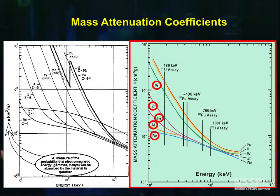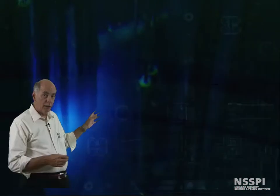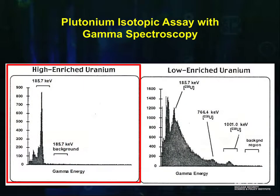Sometimes we're not after the amount, but we are very eager to know the isotopic concentrations of uranium or plutonium. Here is a spectrum of highly enriched uranium, and what's significant in this spectrum is what's not there.